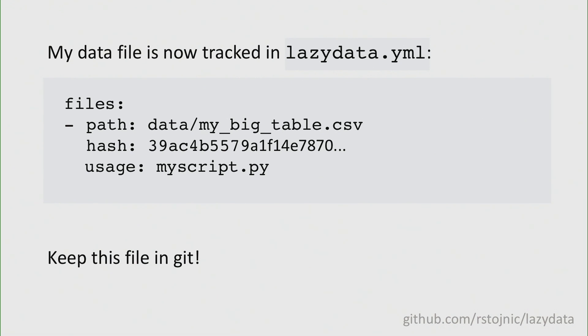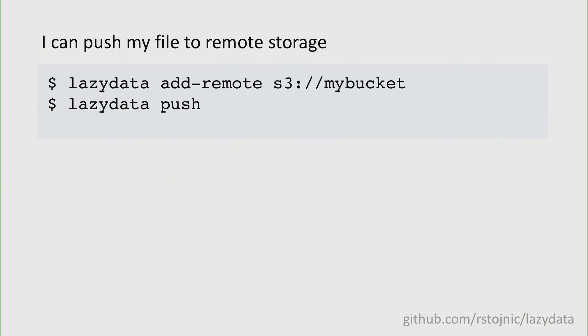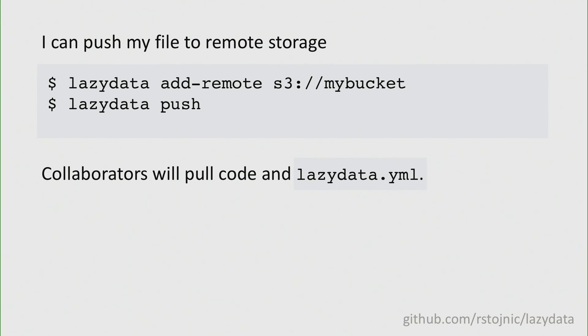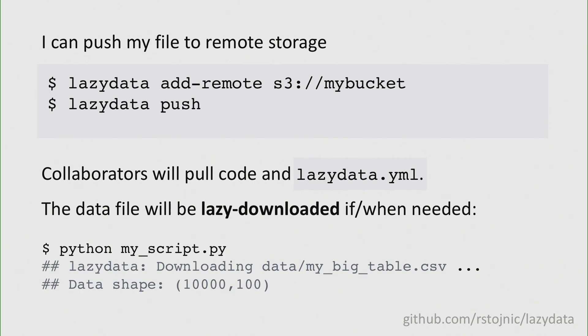You've now versioned all of your stuff within your project. Now, of course, we want to share this, so we're going to add a remote. In this case I'm going to use S3, and do lazy data push — that just takes everything locally cached and pushes it to S3. Then collaborators can pull the code, and with the code they'll get the lazy_data.yml. They can download individual files, directories, or whatever. Or they can just run Python my_script.py.